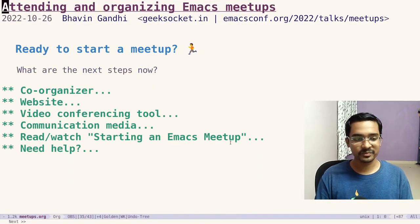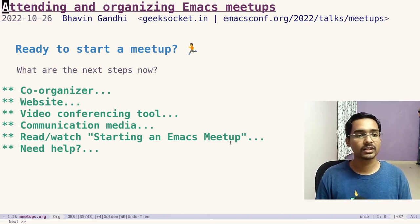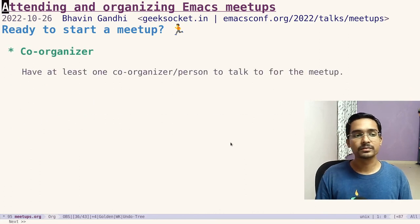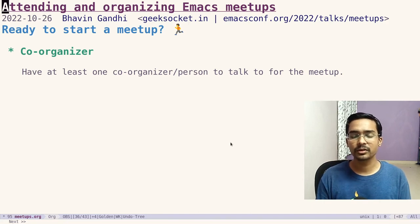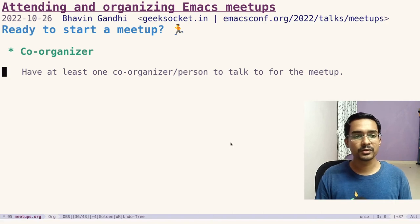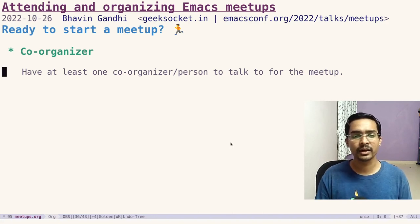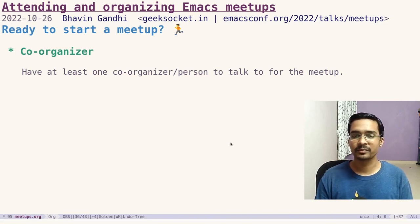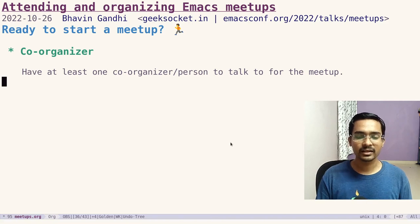Are we ready to start a meetup? Let's go through a checklist. First, have a co-organizer — at least one person to talk to during the meetup, so even if no one shows up you'll have someone to discuss the topic with. If someone is hesitant about the responsibility of co-organizer, just ask them to come along and have the discussion. As Andrea explained in his talk, a buddy — someone helping you with your Emacs journey — and their mentee can make their meeting public as a way to start or spin off a meetup.